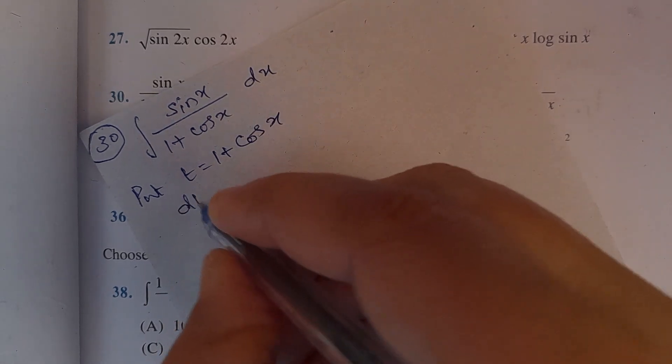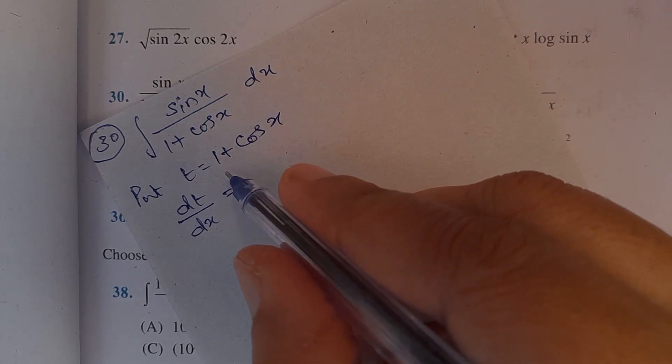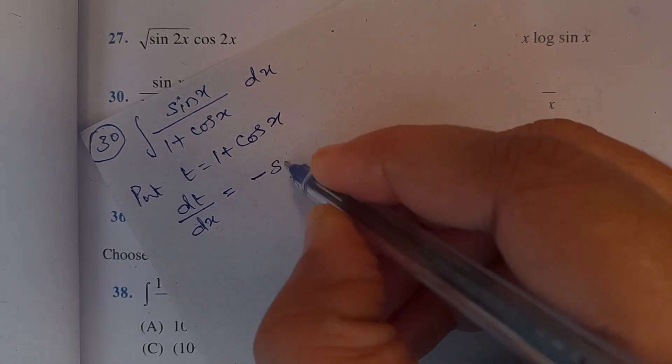Take differentiation of t with respect to x. Differentiation of 1 is 0, differentiation of cos x is minus sin x.